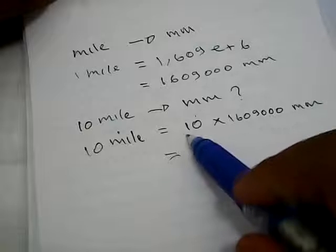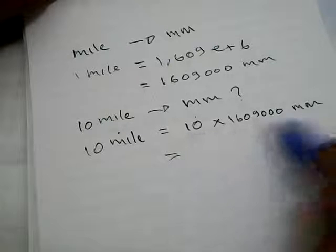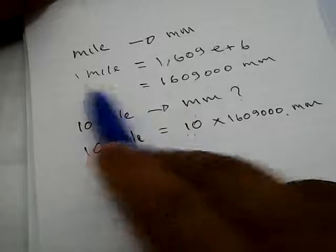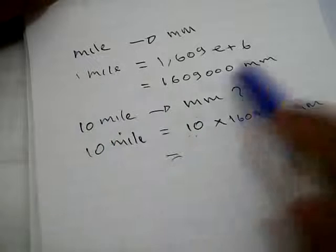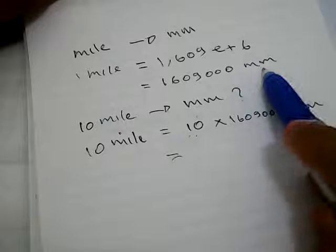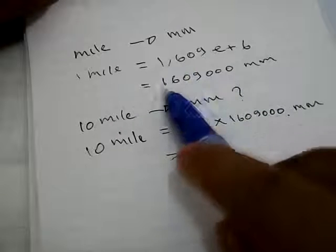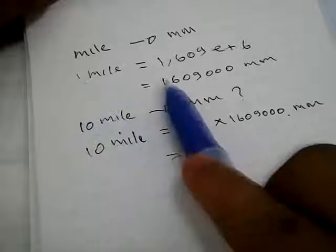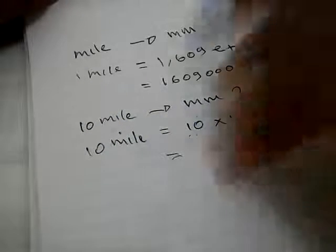Why do we have to multiply this ten with this number? It's all because we want to convert miles into millimeters. And this is the conversion factor. Anything that comes before miles, we need to multiply it with this number. In this case,